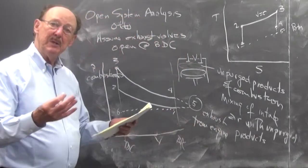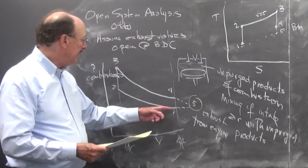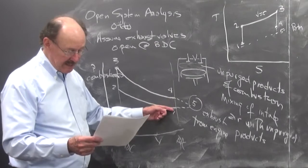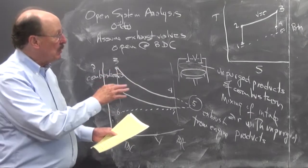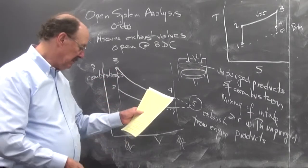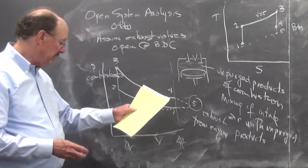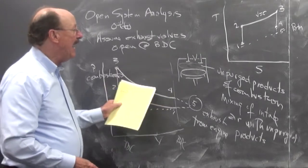So I'm going to have mixing of intake air with the unpurged product. And so it increases the temperature, so then at state 1, I'll have a slightly higher temperature. Now, what happens is this is a more complicated analysis, it's complicated in the first place.